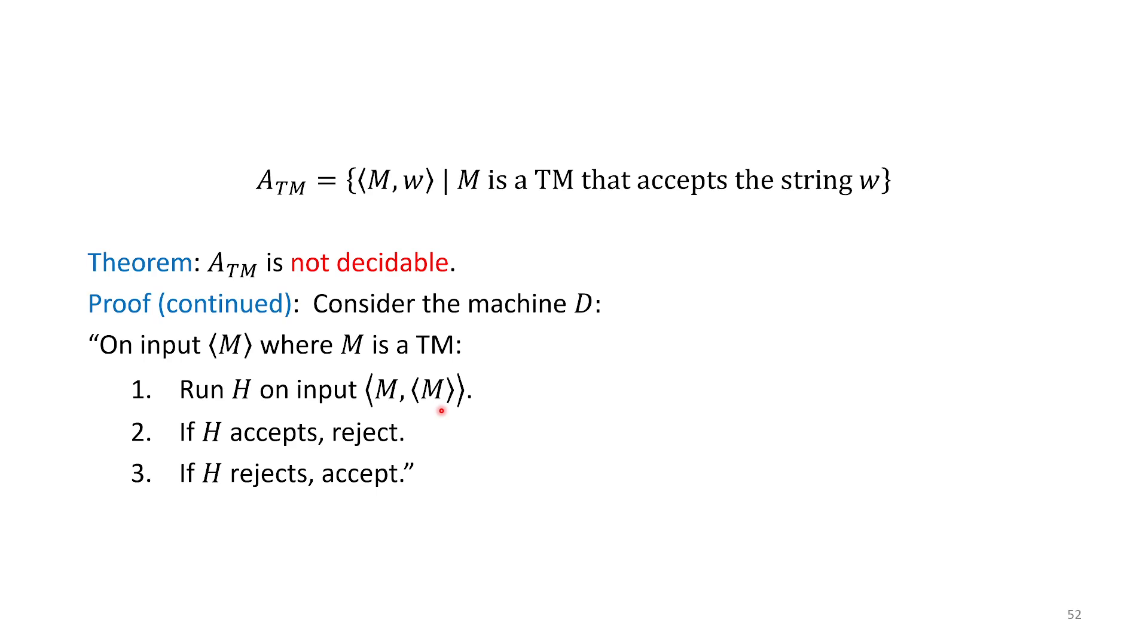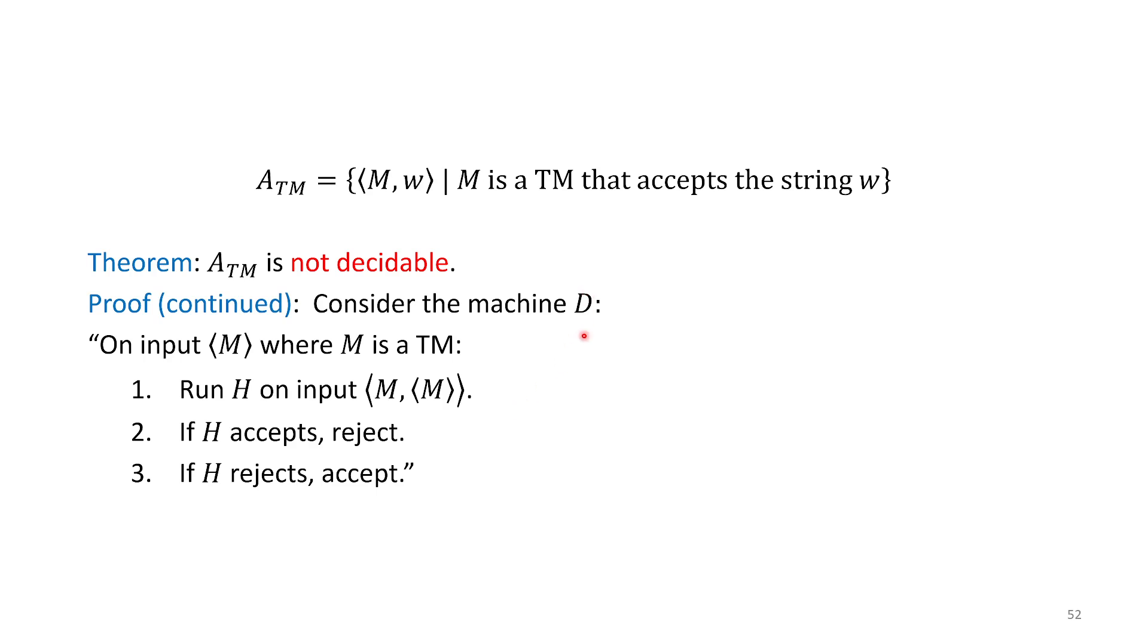Remember in our Cantor proof, we were diagonalizing against bits in our expression of numbers, showing one of our bits was always different. That's what we're showing here. We're trying to show D is not going to be equal to any of these Turing machines. We're going to do that by having it run a machine on itself. Eventually, we're going to run D on D. Imagine what happens if we run D on D.